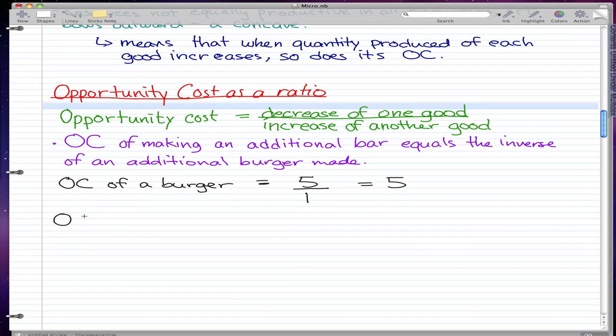Now the opportunity cost of a burger is five bars, right? Just forgot the units. So the opportunity cost of a bar is the exact same thing. What we give up is we give up one burger, that's the decrease of the other good, decrease of one good, which is the one burger, and we increase the quantity produced of our energy bars.